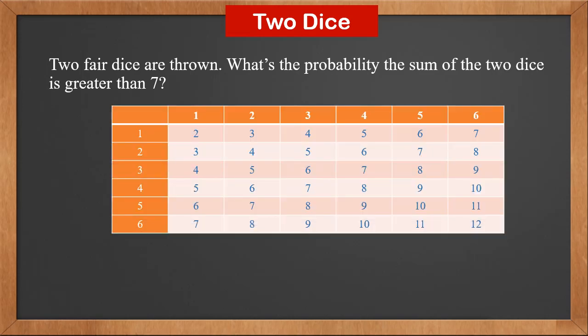In order to calculate the sum, we draw a table. The first row and column are all 6 numbers. We calculate the sum in the content and they are shown in blue. The total number of outcomes is 6 times 6, which is 36.